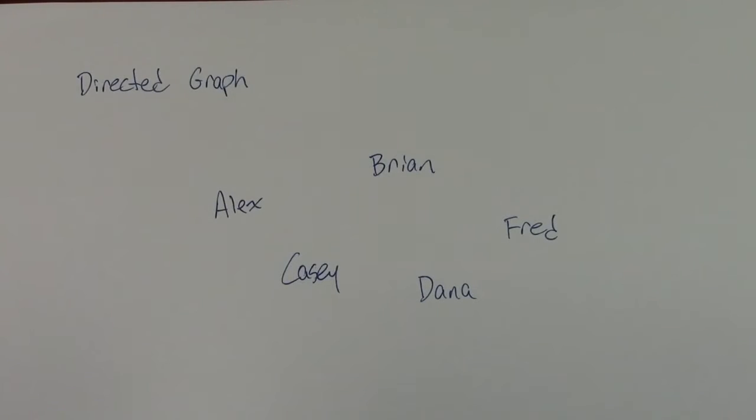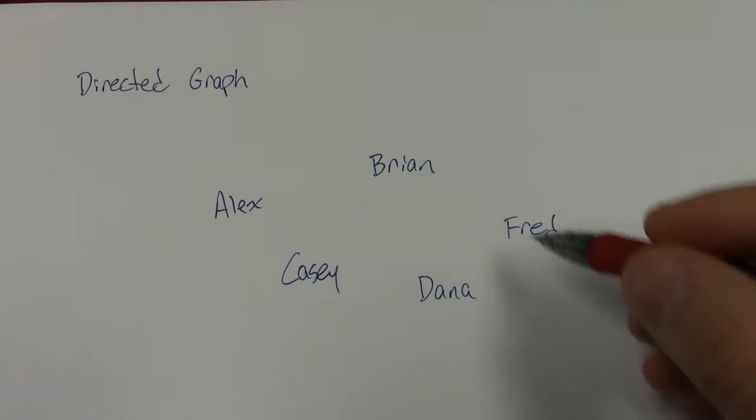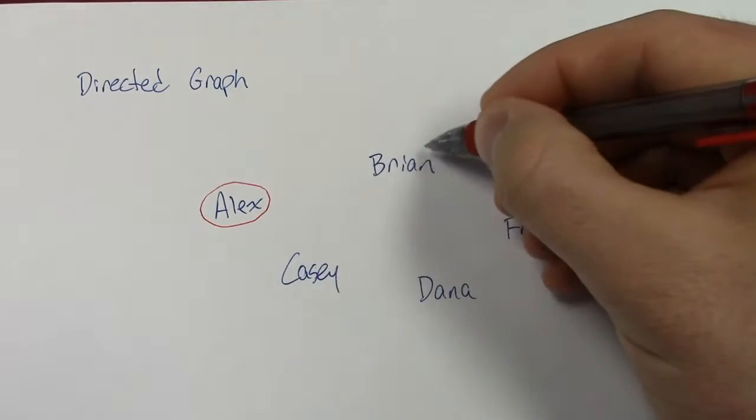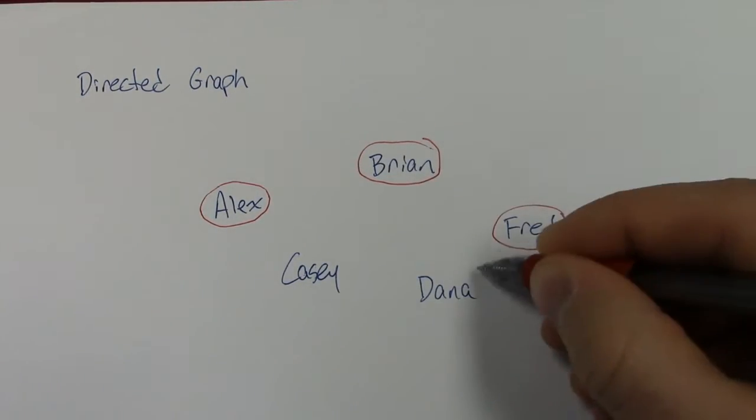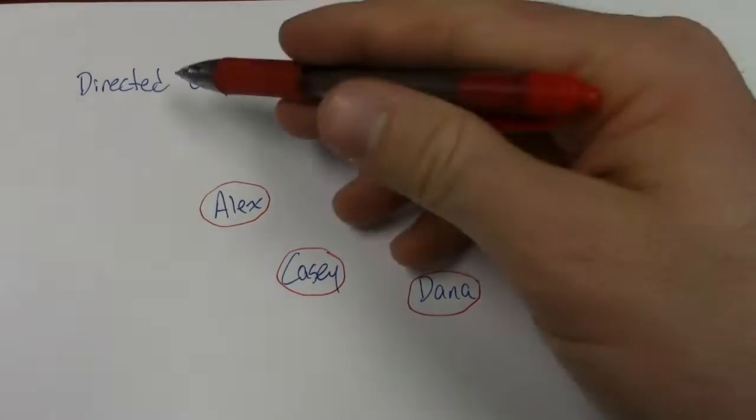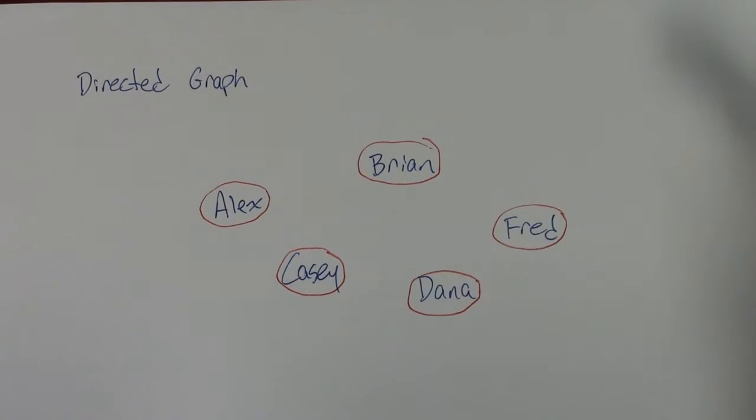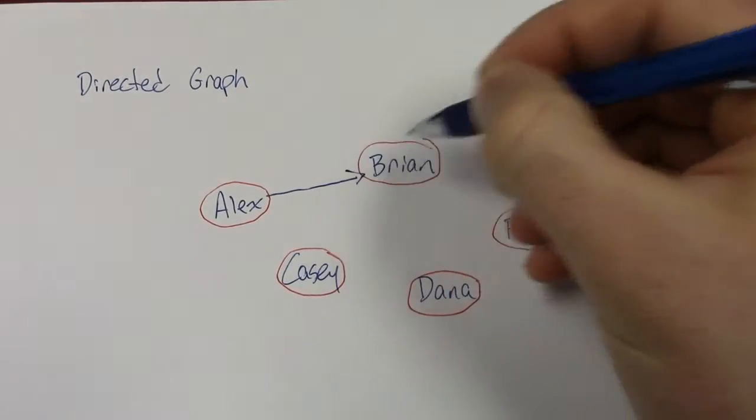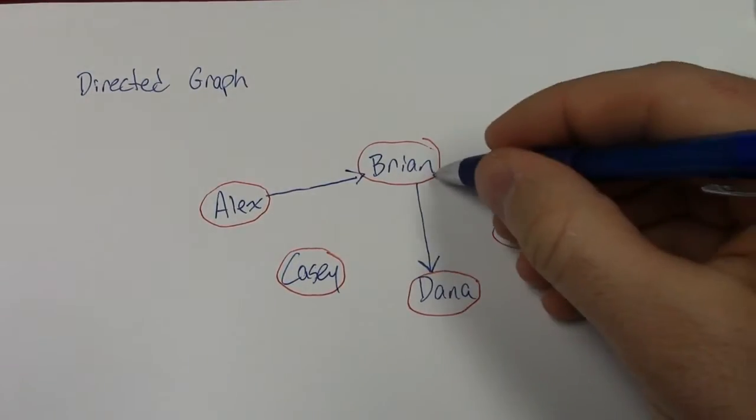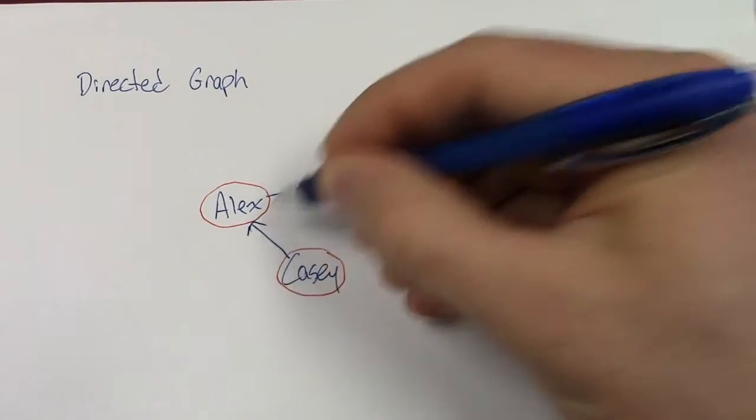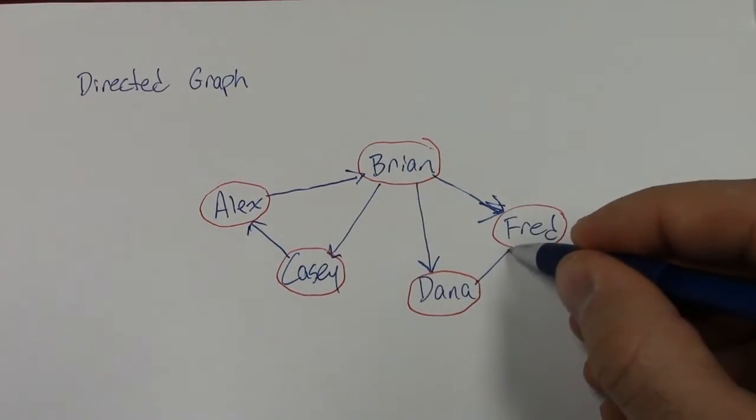The previous example with the airports is called an undirected graph because across each edge you can go either way. But there's also a version of graphs called directed graphs. Let me draw several people here: I've got Alex, Brian, Fred, Dana, and Casey. These are all people in this example of a directed graph. Maybe what we want to model is who is following who on Twitter. Perhaps I have Alex following Brian, and Brian is following Dana and Fred. Casey is following Alex, and Brian is following Casey.